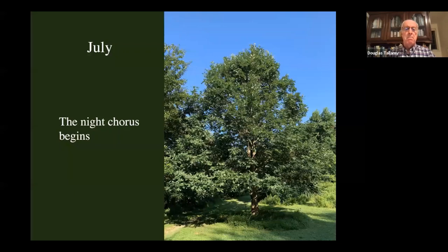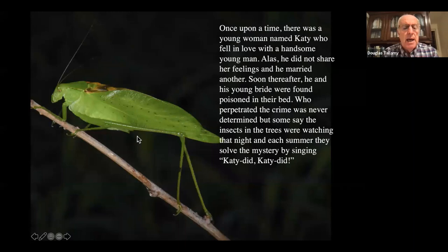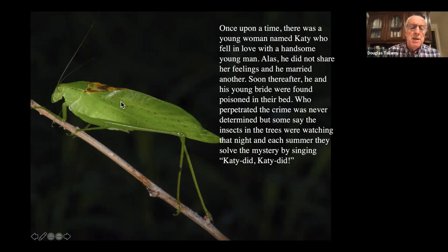July is the month when, if you go out at night, you hear a chorus of singing creatures we call katydids. I used to do a lot of camping when I was young and the katydid singing at night would sing me to sleep. What happens is the males sing to attract females — they lift their wings and rub them back and forth on sclerotized parts, and the different species make different sounds.